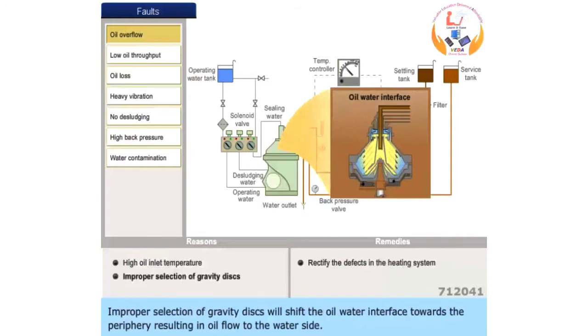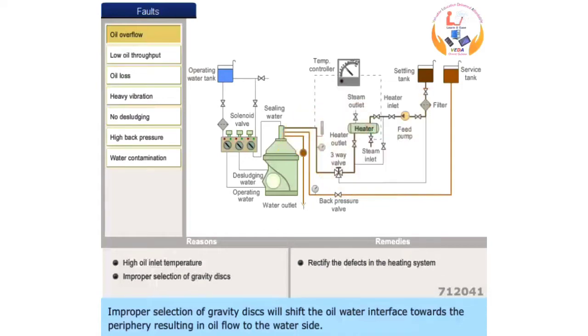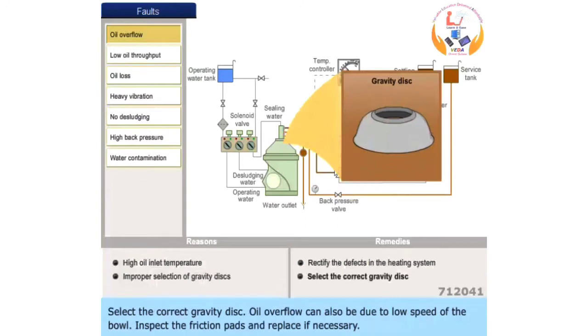Improper selection of gravity disks will shift the oil-water interface towards the periphery, resulting in oil flow to the water side. Select the correct gravity disk.